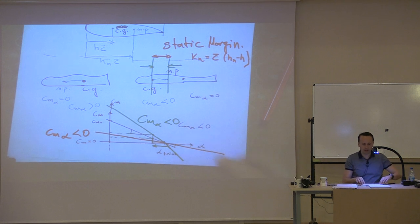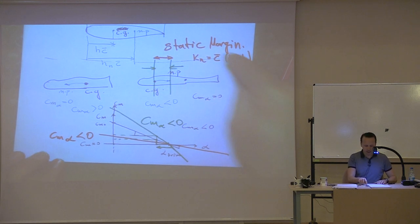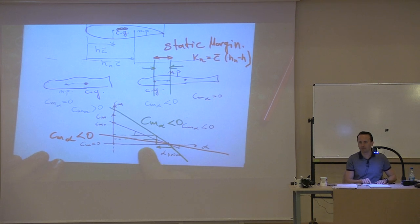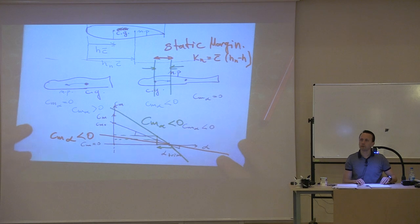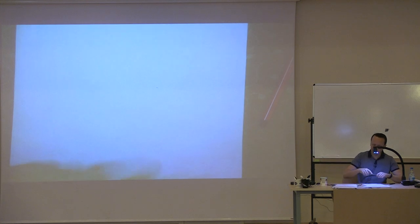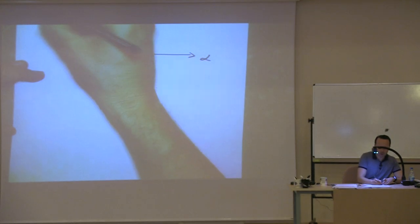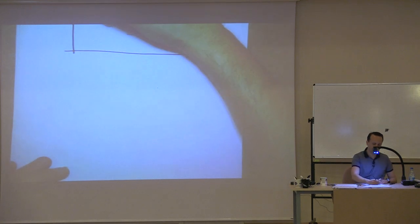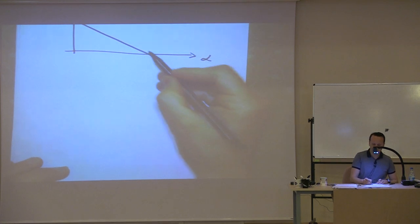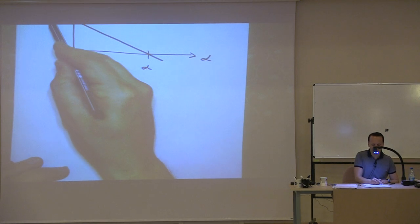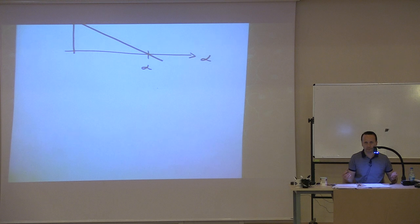This is a very fundamental subject. Remember the key graph: CM versus alpha, with alpha trim, CM_zero must be positive, and CM_alpha is negative. Any questions on static margin, CM_alpha, restoring moments?